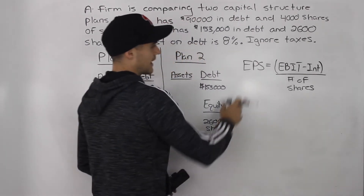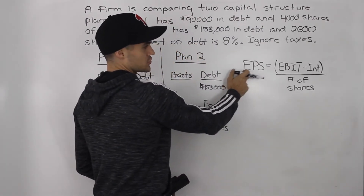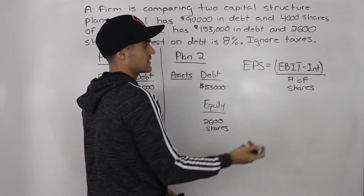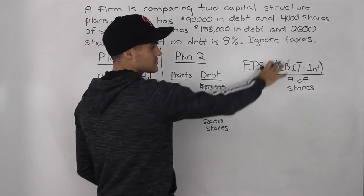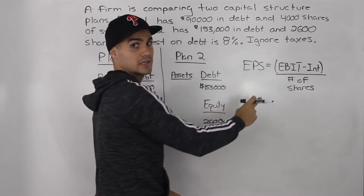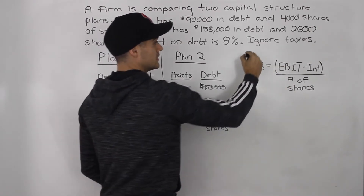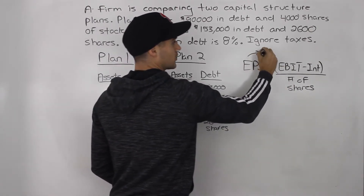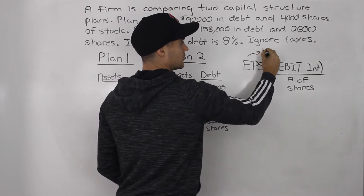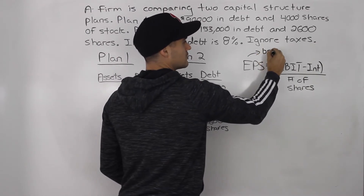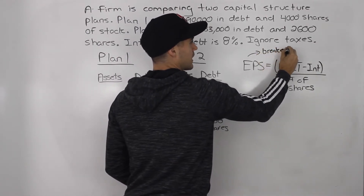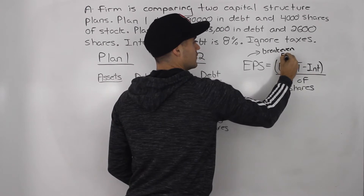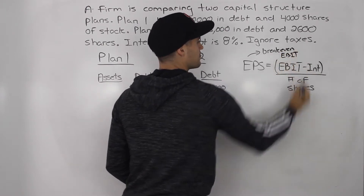Note that this simplified EPS formula — without (1 - T) — only works for the break-even EBIT calculation. If this were an accounting course, that formula would be incomplete. So this EPS formula is only used for break-even EBIT.